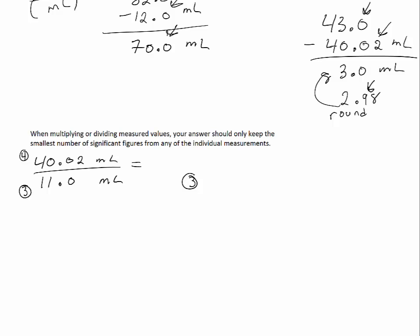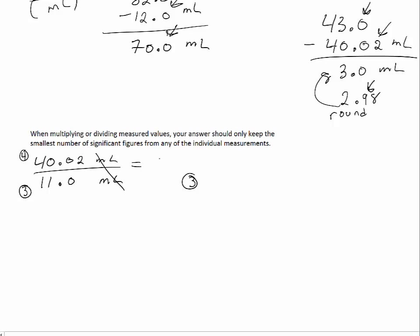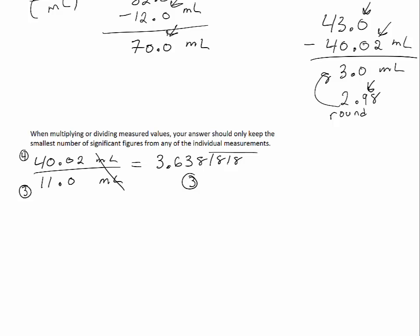What happens to the units when you divide two volumes? They both cancel out, so you'd have a unitless ratio. When you do that division you get 3.638181818 repeating, but you're only supposed to keep three significant figures. You want to keep the larger values since they carry more importance, so you get rid of the smaller ones. The answer is 3.64 — you round that 3 up to 4 because what comes after is greater than 5.